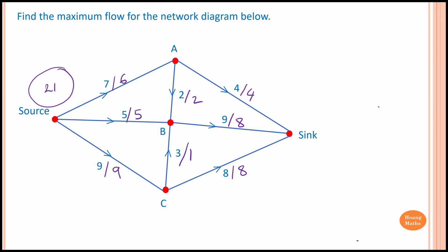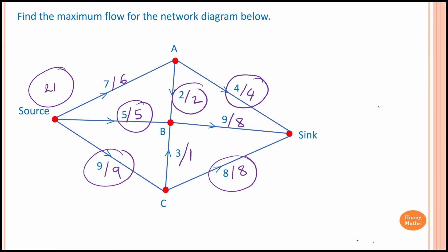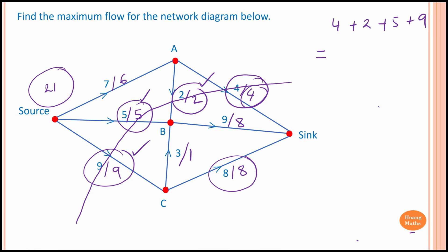Now we circle the edges that are flowing at their maximum capacity. We then need to cut through them in a way that separates the source from the sink — we can cut here, ignoring this edge, which stops all flow from source to sink. Adding up the cut edges: 4 plus 2 plus 5 plus 9 — that is 4 plus 5 equals 9, plus 9 equals 18, plus 2 equals 20. Therefore, the maximum flow is 20 units.